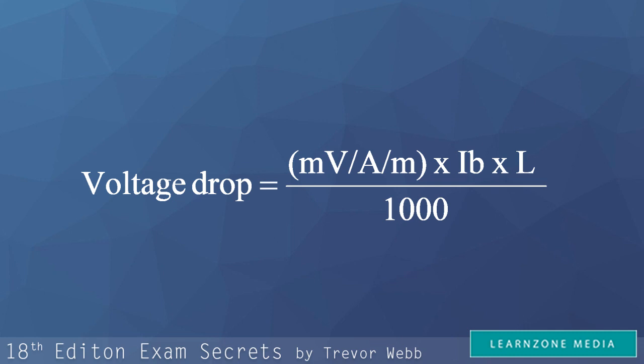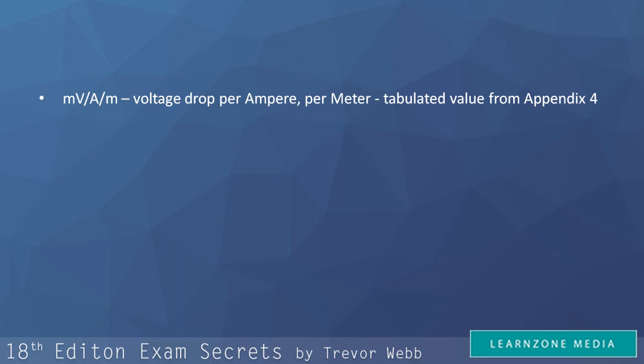Right, so let's talk about this formula for just a little bit. What you need to know is that millivolts per amps per metre stands for voltage drop per ampere per metre, and this is a tabulated value that is specific for each cable listed in appendix 4.